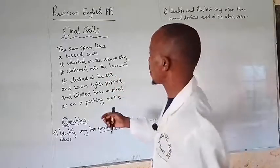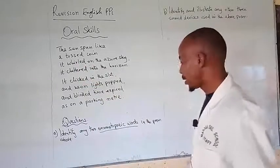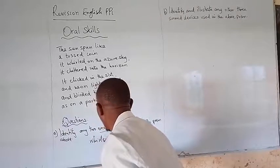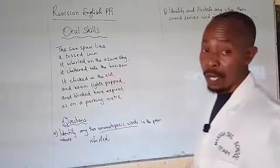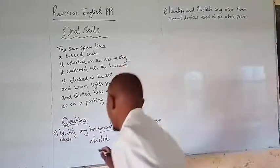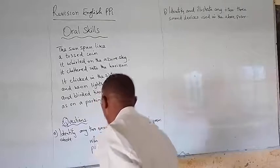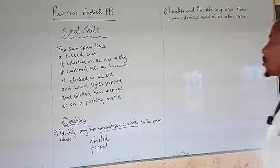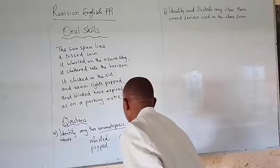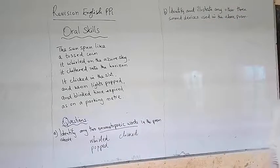For instance, we are talking about 'whirled' in the sky. 'Whirled' is an example of an onomatopoeic word. Again, we have 'popped.' We could as well talk about 'clicked.' These are onomatopoeic words.